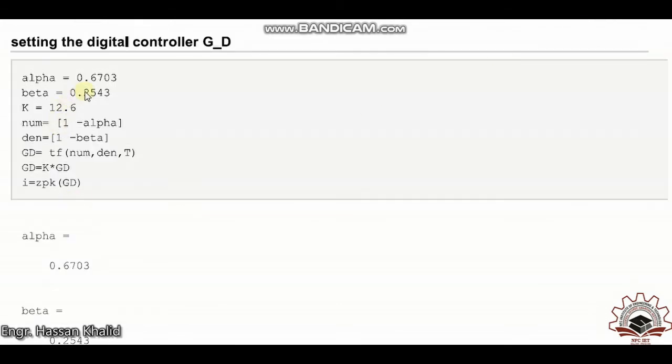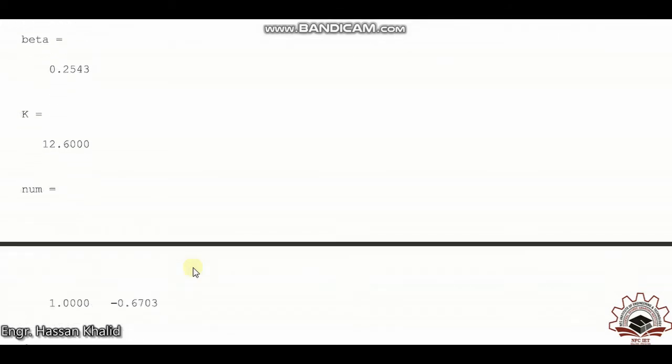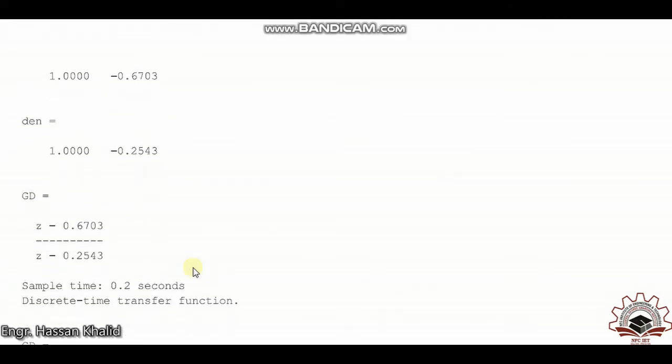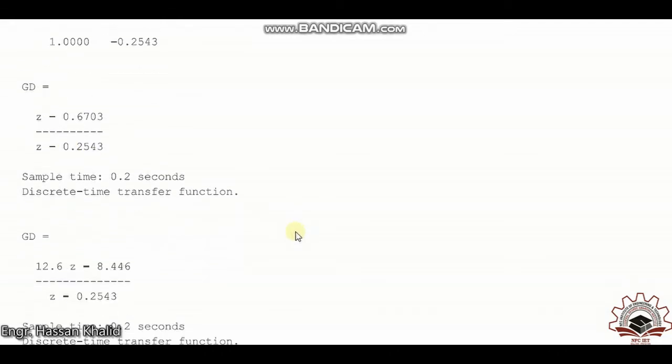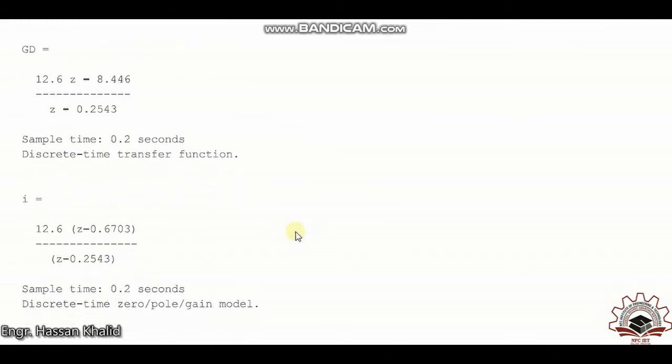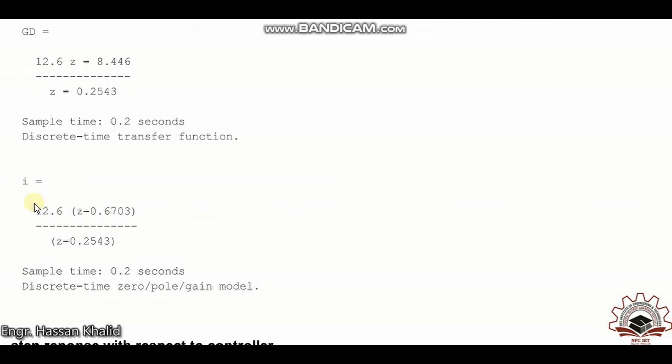Finally, we define the parameters of the digital controller for alpha, beta, and k that were evaluated numerically in our previous lecture. You can easily find the digital controller G of D, defined by z minus 0.6703 divided by z minus 0.2543, and multiplied by gain k.